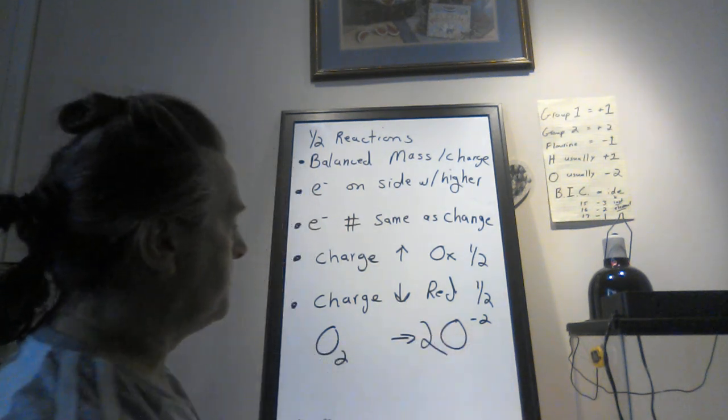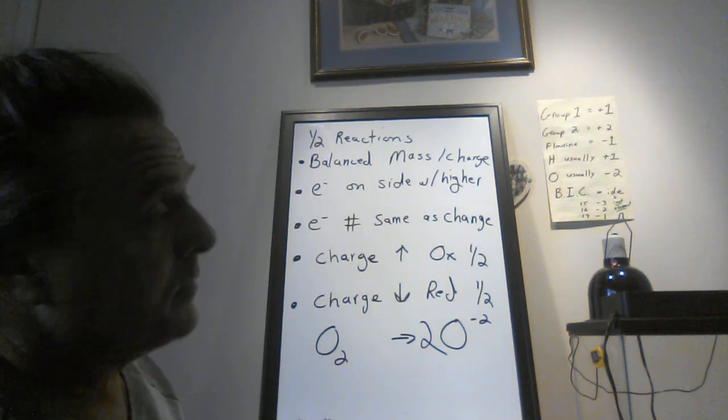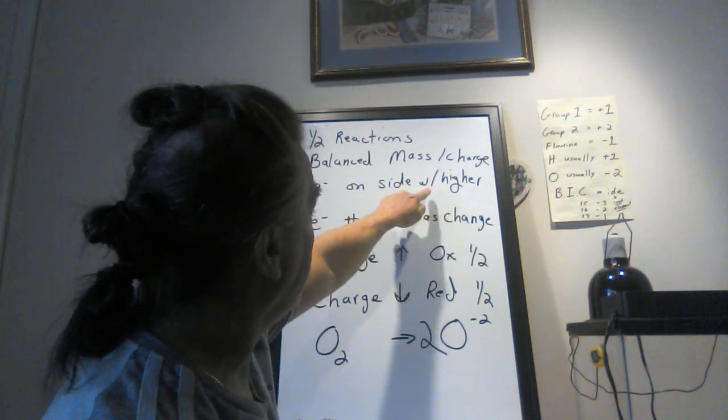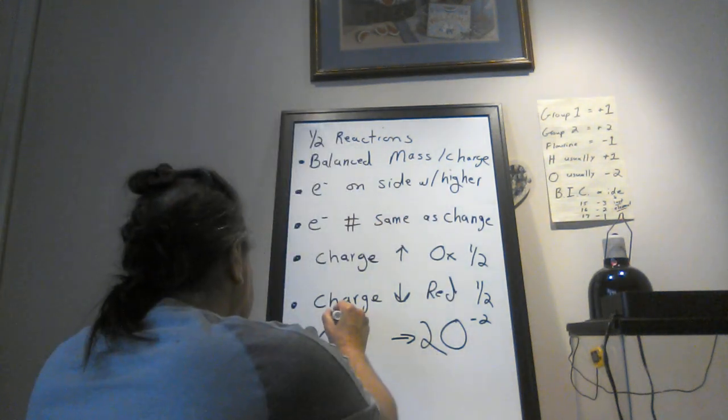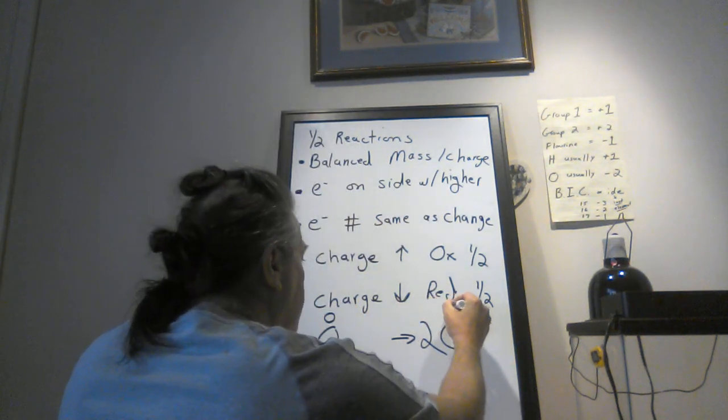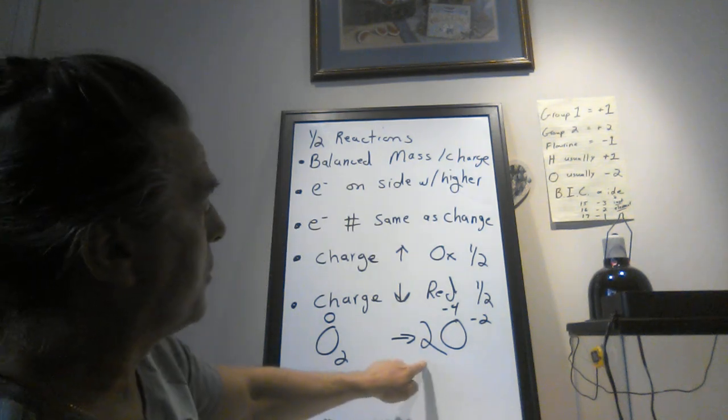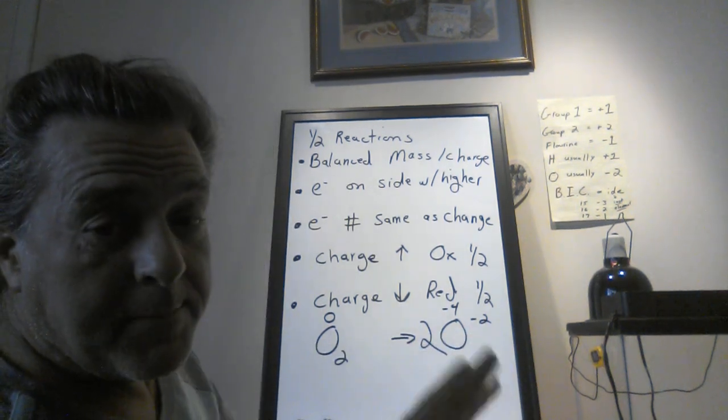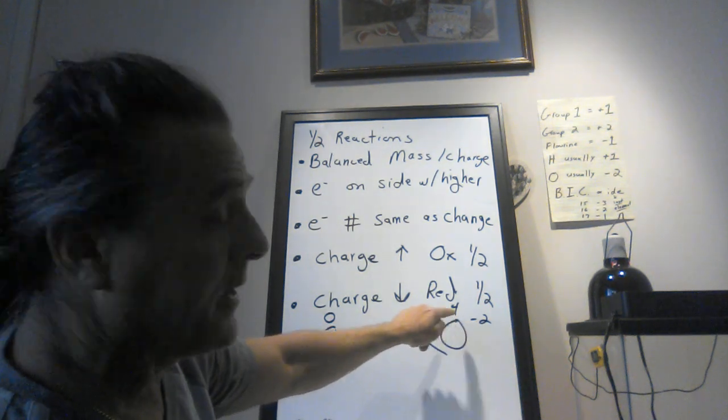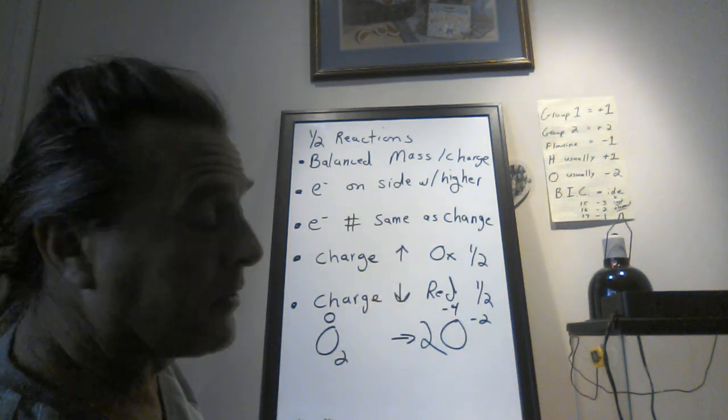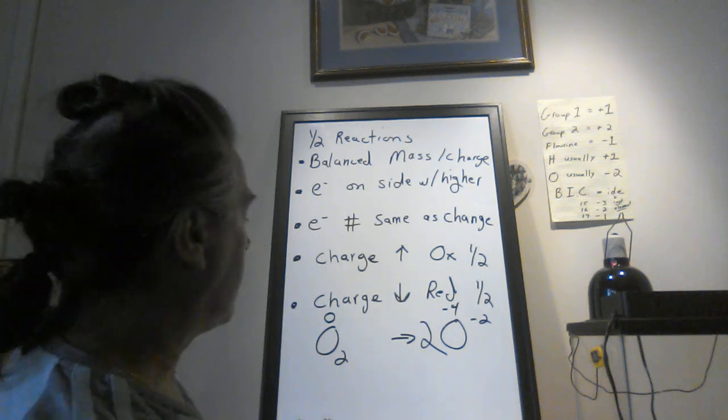Now charge. Electrons are going to go on the side that's higher. This side is zero, this side is technically negative four because there's two negative twos. That means I have to have four electrons in it. Zero is higher than negative two or negative four, however you want to think of it, doesn't really matter. So I have to put in four electrons.